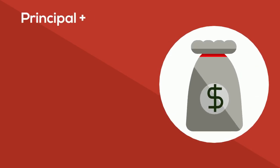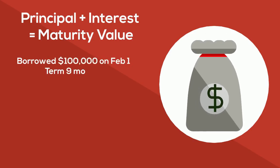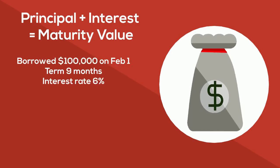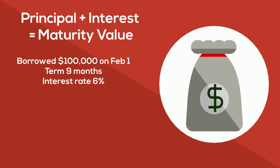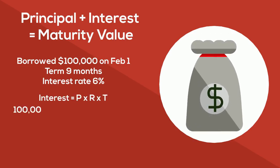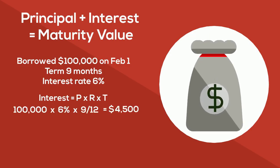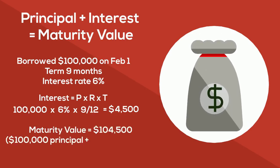The amount you pay back when the note is due is the principal plus the interest — this is called the maturity value. Assume we borrowed $100,000 on February 1st with a nine-month term at 6% interest. Using P × R × T: $100,000 × 0.06 × 9/12 = $4,500 interest. Therefore, the maturity value is $104,500 — $100,000 principal plus $4,500 interest.